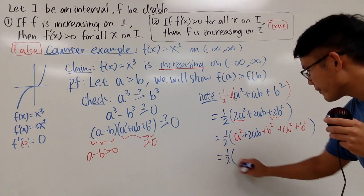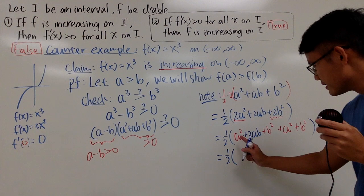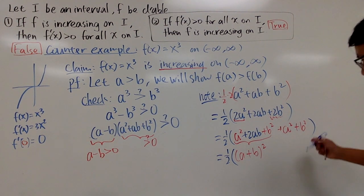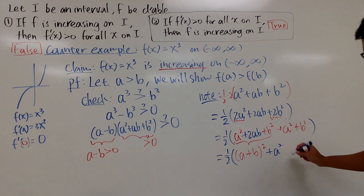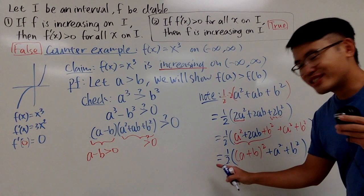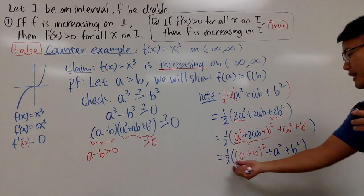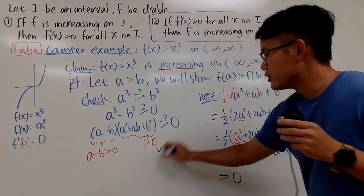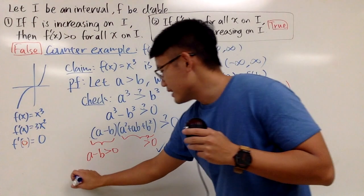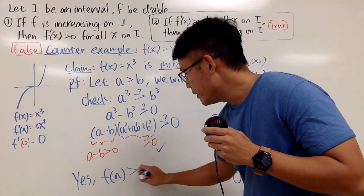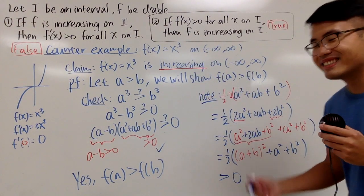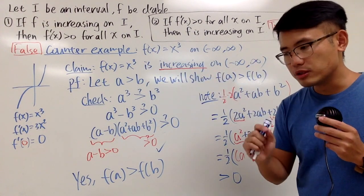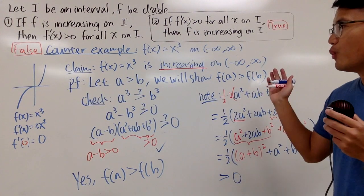And this is one half times [(a + b)² + a² + b²]. This is a nice perfect square plus another perfect square plus another perfect square, all times a positive one half. Of course, this is always greater than 0. So a² + ab + b² > 0 is confirmed. Therefore, f(a) is indeed bigger than f(b). So finally we can conclude that x³ is, in fact, always increasing — and it is also increasing at 0. That is exactly what we wanted to show.